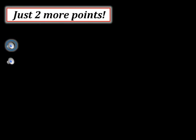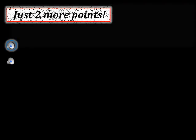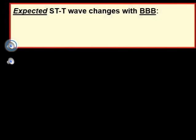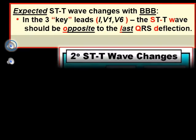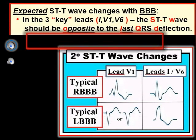You are almost done. There are just two more points to address before we try out our system with some clinical examples. First, what happens to the ST-T wave with typical bundle branch block? Fortunately, there is an easy way to remember the expected changes when the only thing going on is the conduction defect. In the three key leads — leads 1, V1, and V6 — the ST-T wave should move opposite to the direction of the last QRS deflection.